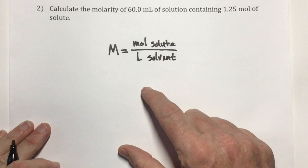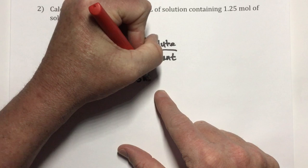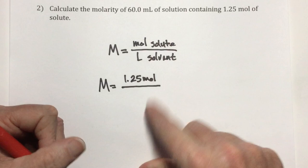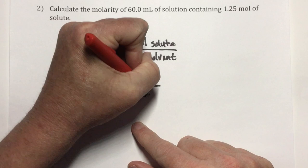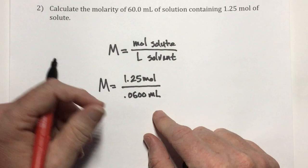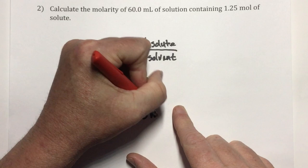In this case, I have 1.25 moles of solute, so my molarity will equal 1.25 moles divided by liters of solvent. The amount of solvent is 60.0 milliliters, which equates to 0.0600 liters. So M equals 1.25 moles over 0.0600 liters.